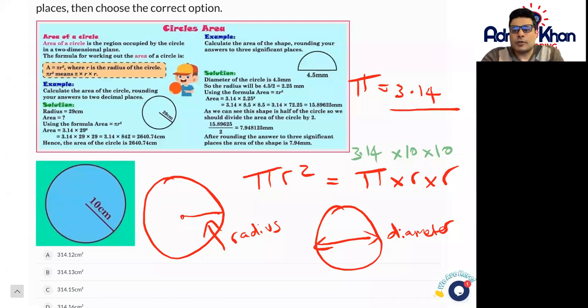According to my scientific calculator, it's 314.1592. Now the question states to two decimal places, so in this case the answer is going to be 314.16, and the reason is because the nine is more than five.